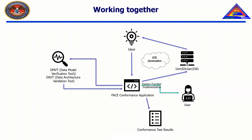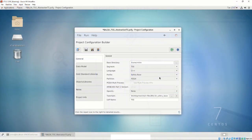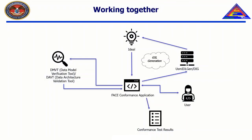After the factory functions are defined, the user must provide their location to their PCFG file. To test for conformance, users can press the arrow at the top right of the project configuration builder. This first invokes the DMVT slash DAVT, which checks the USM for correctness. Then the CTS performs all conformance tests and produces a conformance test report. The CTS also contains a feature to run conformance tests via command line on both Windows 10 and Linux, and both methods are equivalent in function.